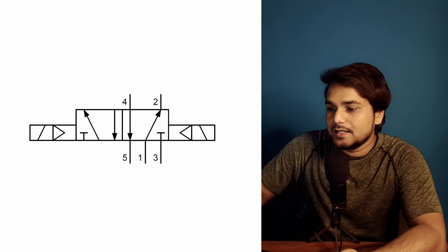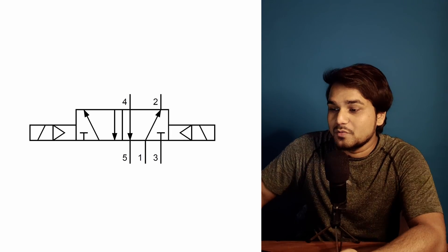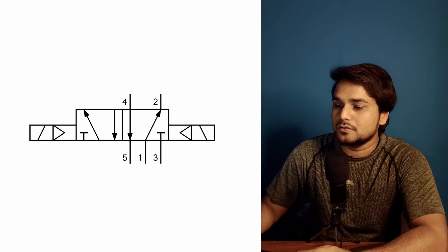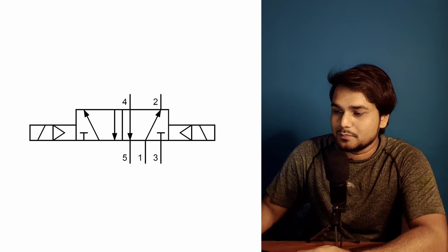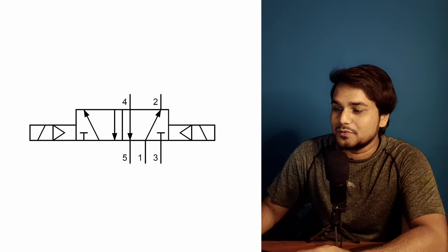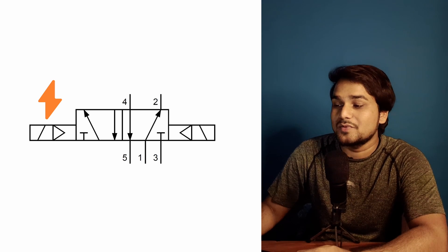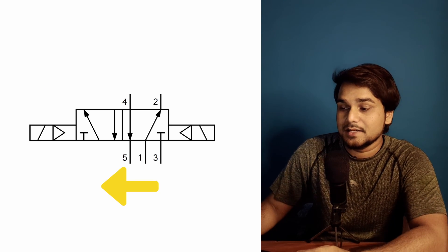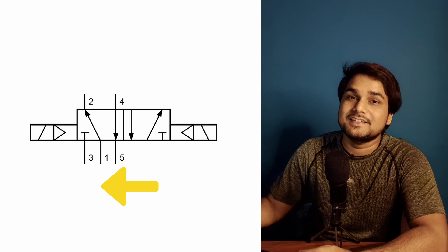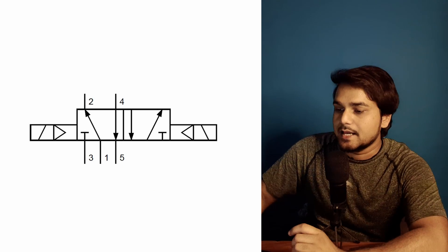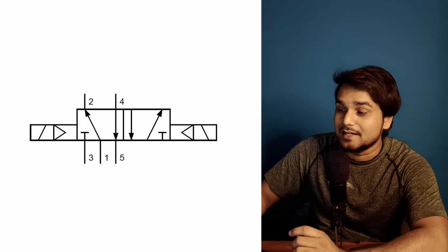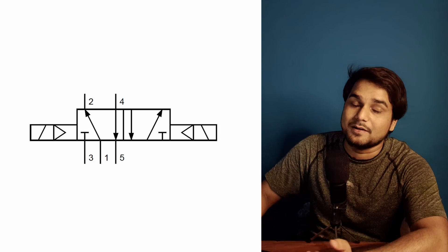5/2 solenoid valves come in double coil and single coil with spring return. In a 5/2 double solenoid valve there are two solenoids, one at each end. To switch the position state, you give a signal once to one solenoid and the valve spool will shift to that side and remain there until a signal is given to the other solenoid.